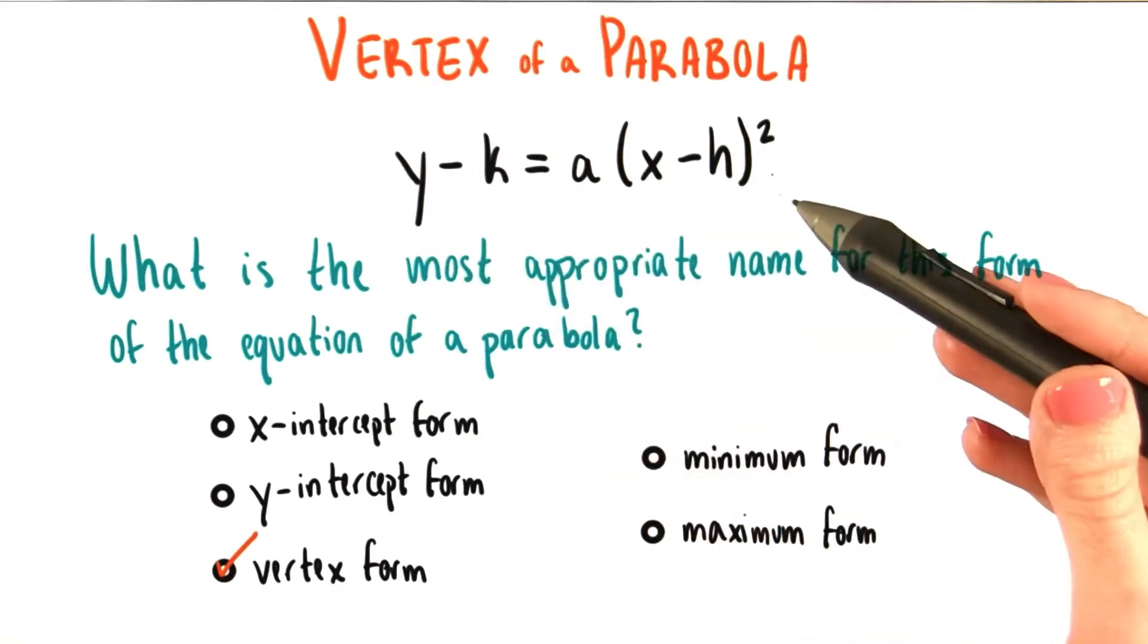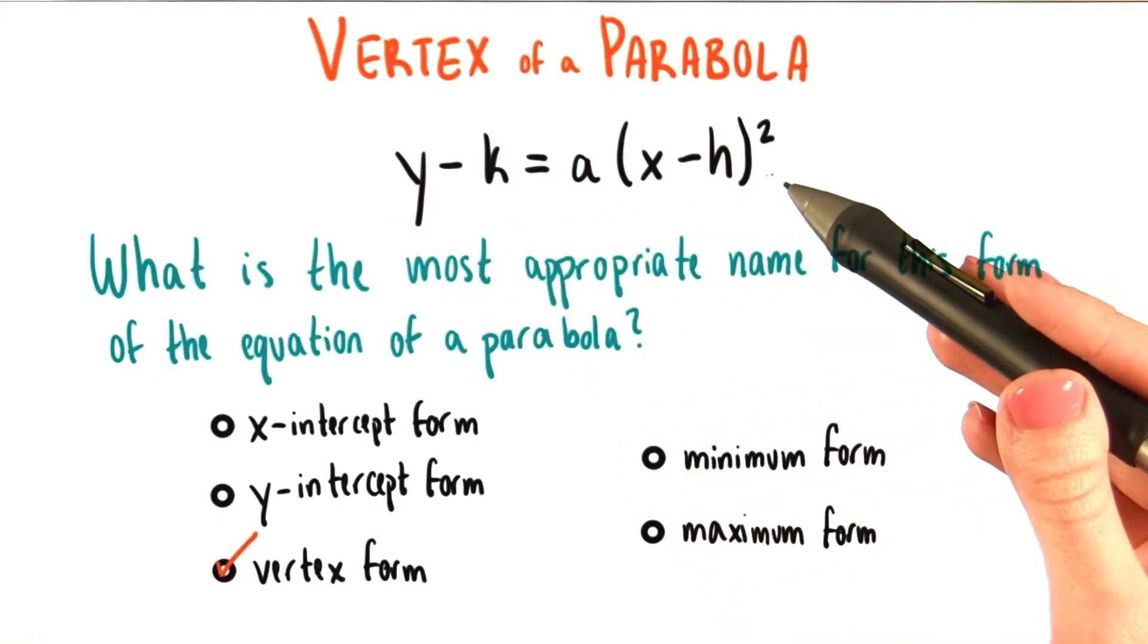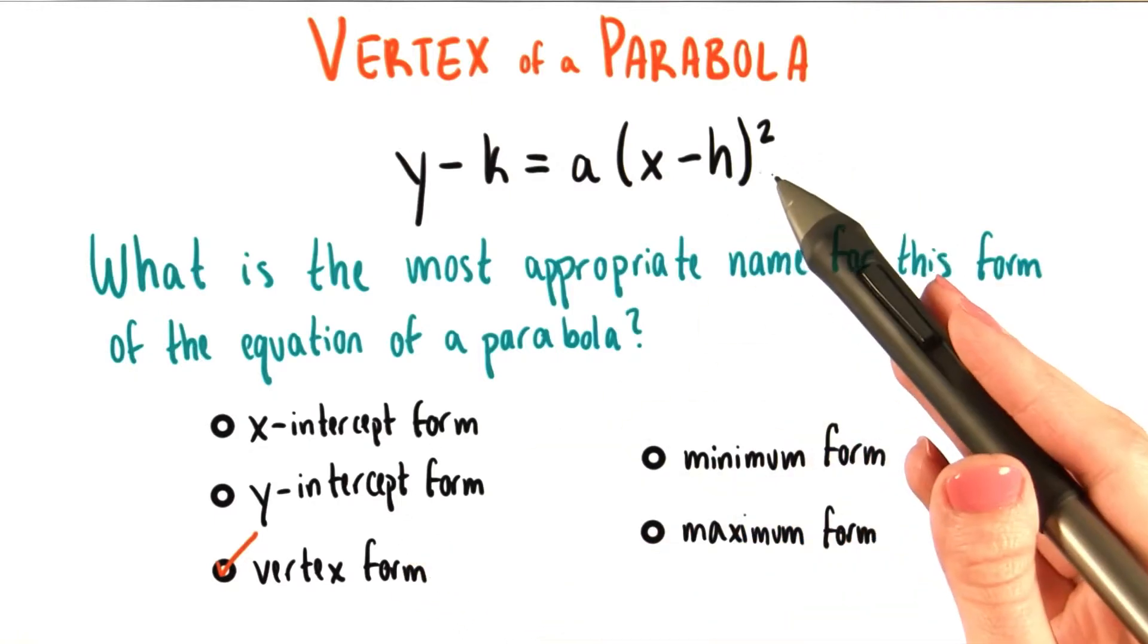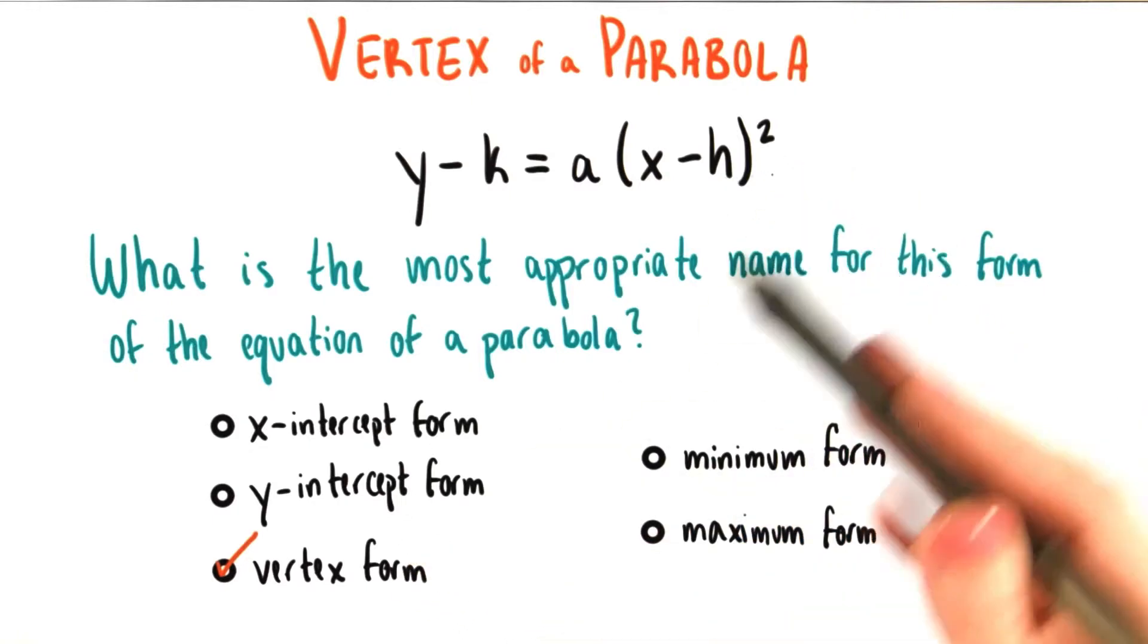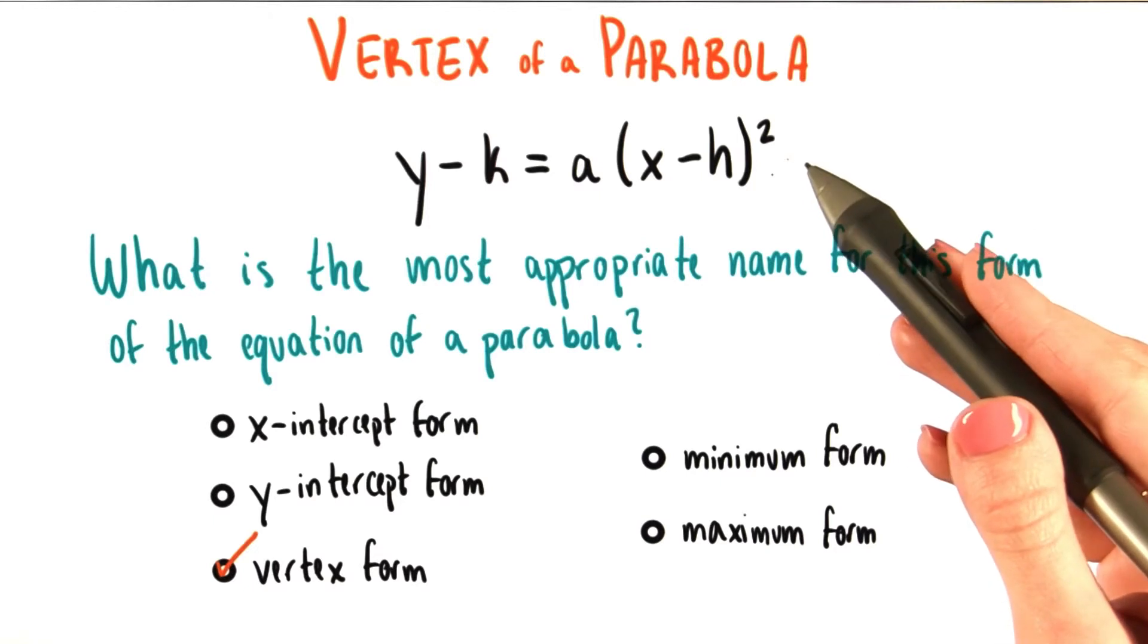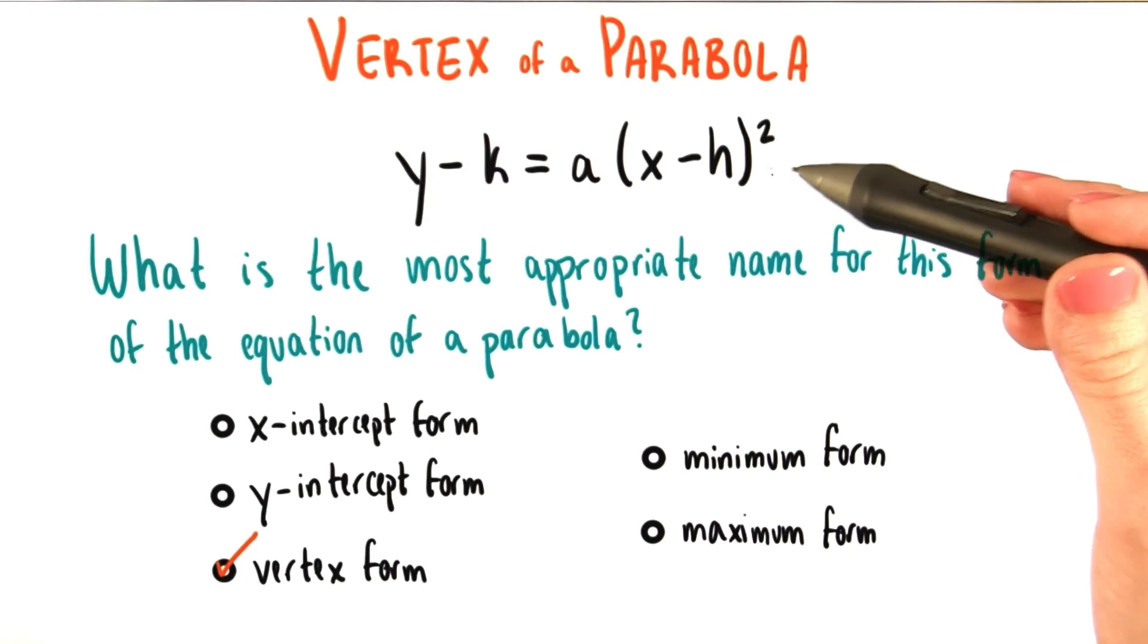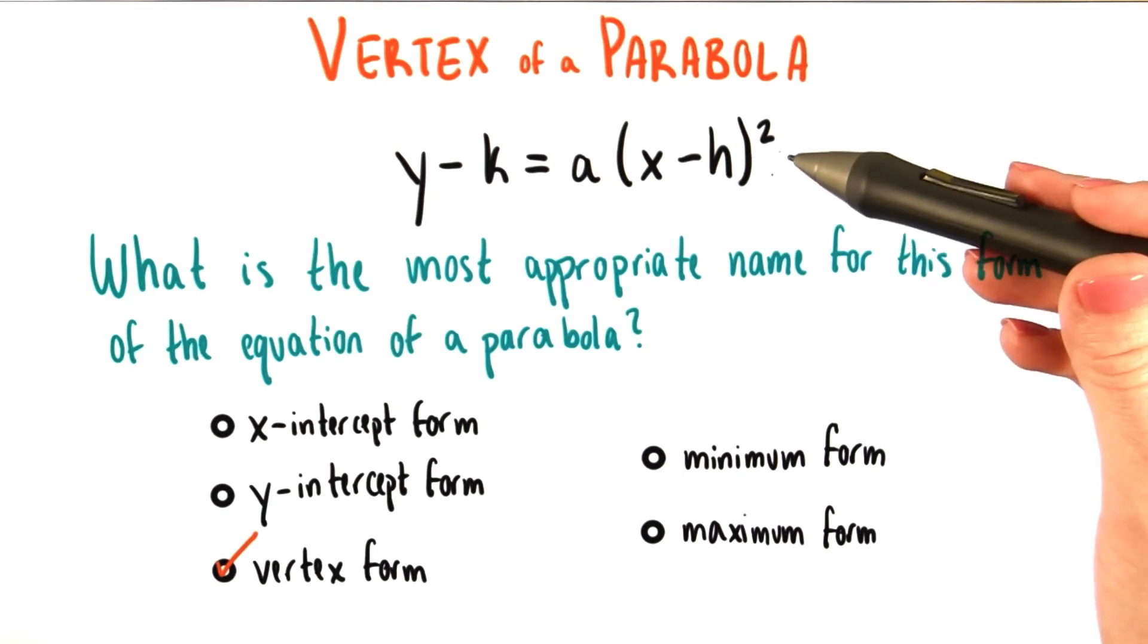Now, there may be some variation depending on what source you look at for what we should call this equation, but for the purposes of this class, we're going to call this the vertex form for the equation of a parabola. You may see other names elsewhere, and there's not one that's absolutely right or absolutely wrong, but for the sake of speaking the same language, know that this is what I mean when I talk about vertex form.